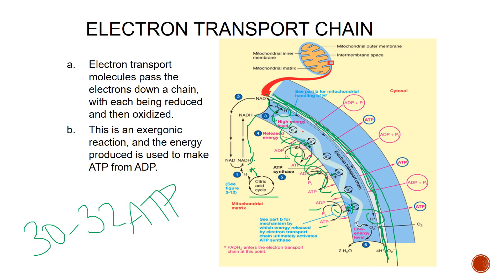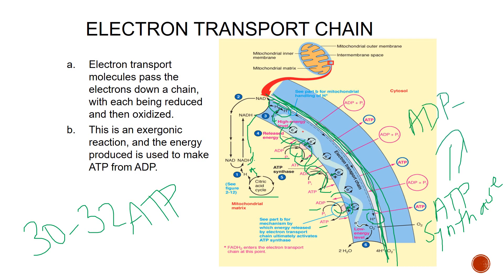Energy is needed to move ATP out of the mitochondria into the cytoplasm, which is why the yield is not the standard 36 ATP molecules that may have been taught in previous years. The final pump is ATP synthase, which moves hydrogens across the membrane and drives phosphorylation, transforming ADP to ATP. This is an exergonic reaction because we are making ATP, or energy.